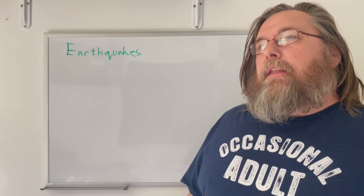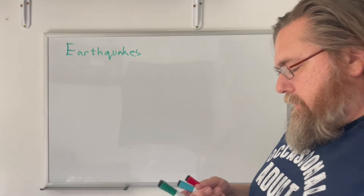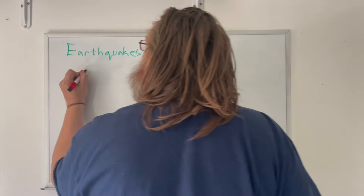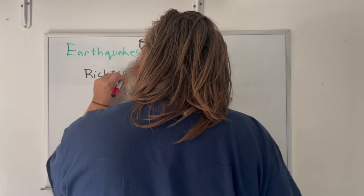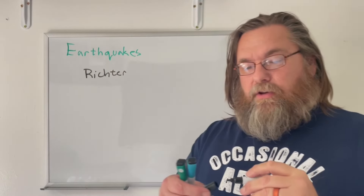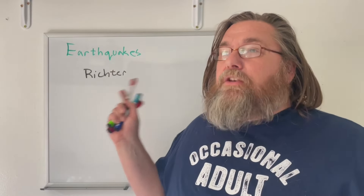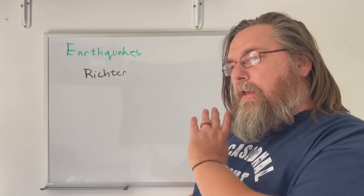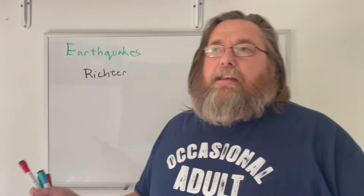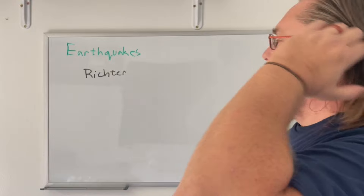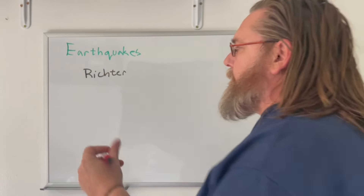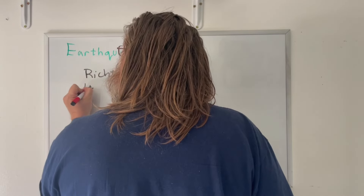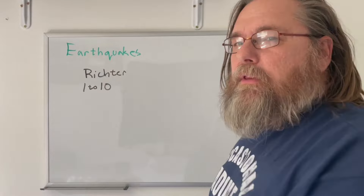I'm going to talk about the Richter scale a little bit, explain what it is, and then we'll talk about the biggest earthquake possible on Earth. Without going too much into the history, how we derive the scale has changed over time, but the differences between steps — between a 1 and 2, a 2 and 3 — have not changed. Theoretically the Richter scale on Earth goes from 1 to 10, though you can get smaller than a 1, but nobody really cares.